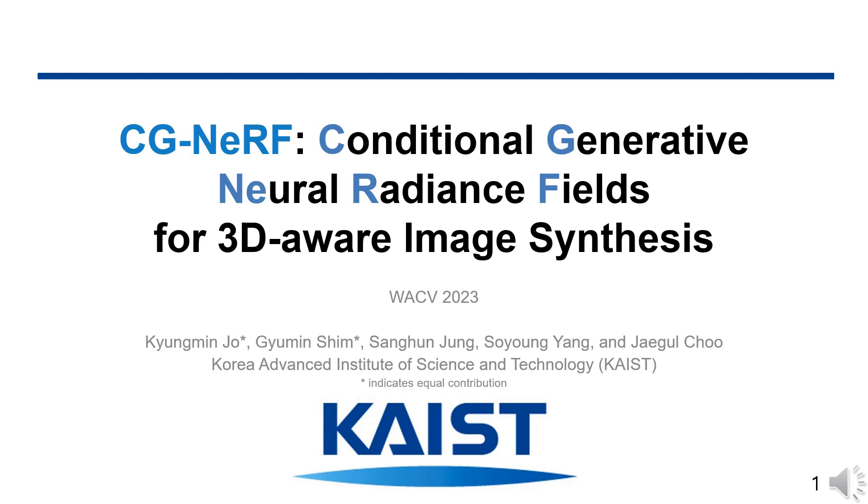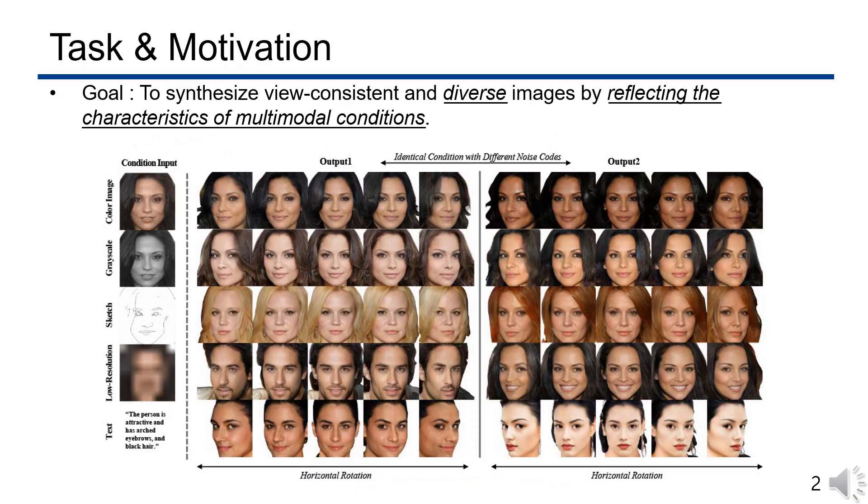Hello, let me explain our paper CGNERV: Conditional Generative Neural Radiance Fields for 3D-Aware Image Synthesis. Recently, many NERF-based generative models achieved the generation of diverse 3D-aware images. However, their applicability is limited because they cannot be incorporated with user-specified conditions such as text and images.